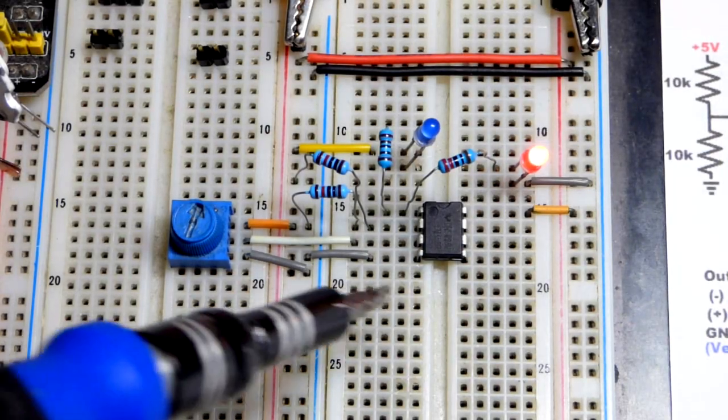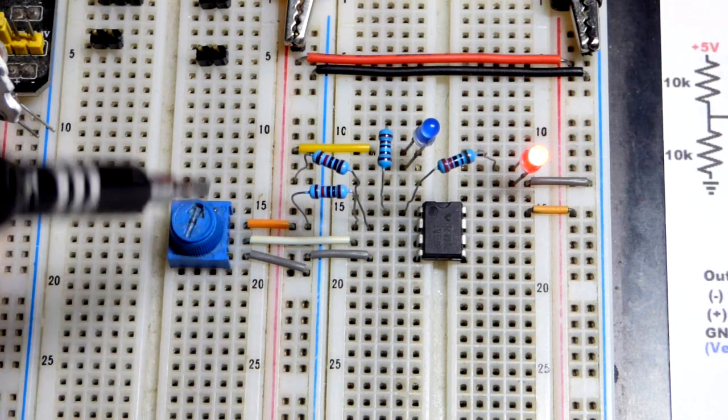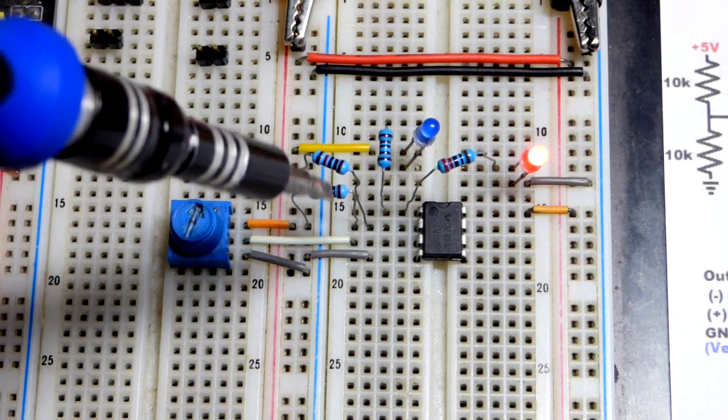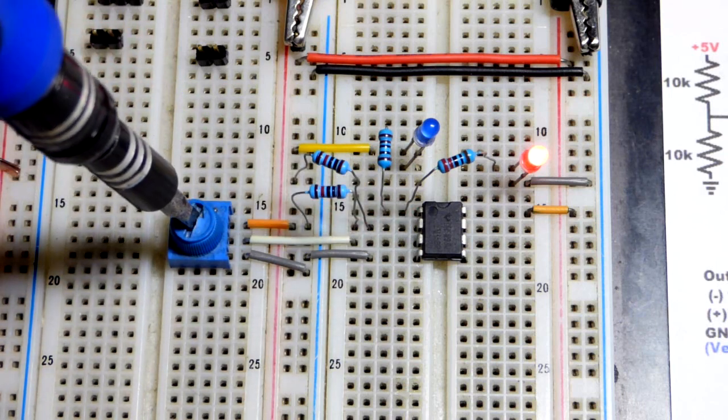So now in this video we're going to look at an op-amp circuit wired as a comparator. Very simple, this is a non-inverting comparator, which means that we set 2.5 volts with equal value resistors to the inverting input. We'll take a closer look at that coming up.